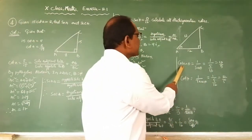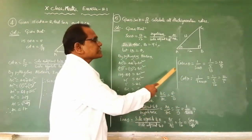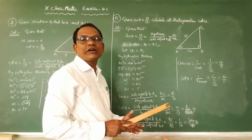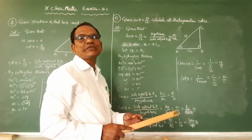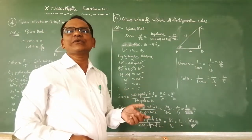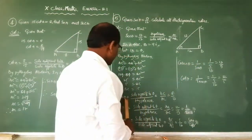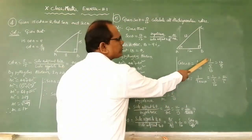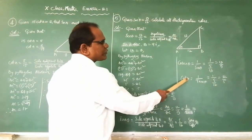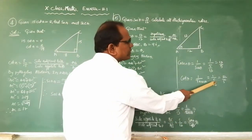Cosec θ: cosec θ is the reciprocal of sin θ, so cosec θ equals 1 by sin θ. Sin θ is 5 by 13, so cosec θ equals 13 by 5. Cot θ: cot θ is the reciprocal of tan θ, so cot θ equals 1 by tan θ. Tan θ is 5 by 12, so cot θ equals 12 by 5.